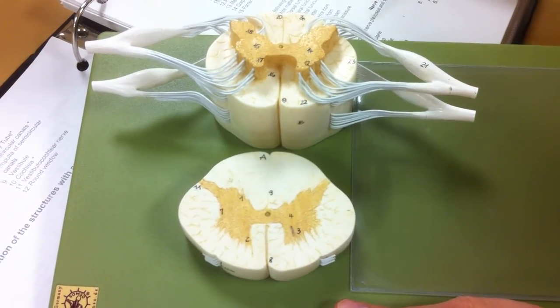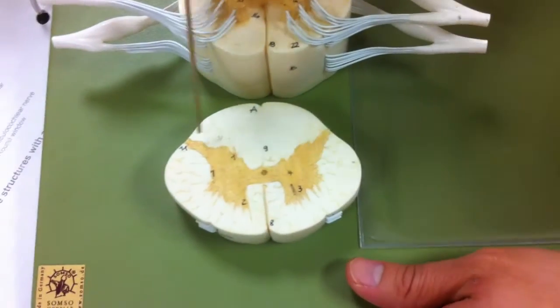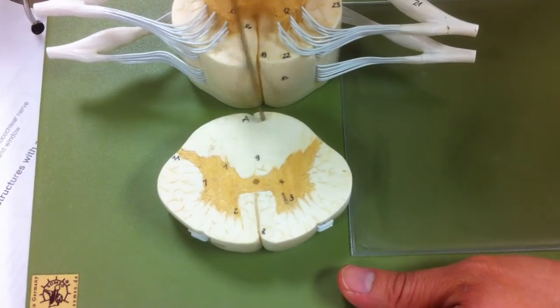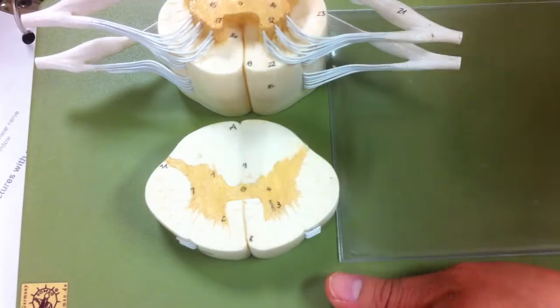Now the gray matter. Posterior horns, as you can tell. How you can tell they're posterior is because they're touching, they're almost coming out. They're touching the outer part of the spine.